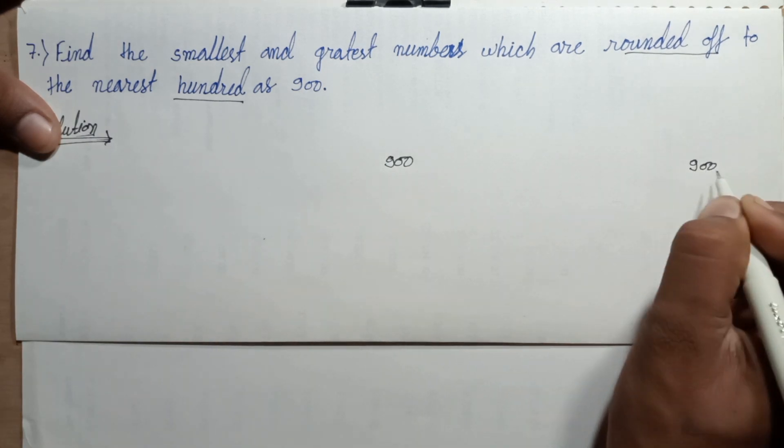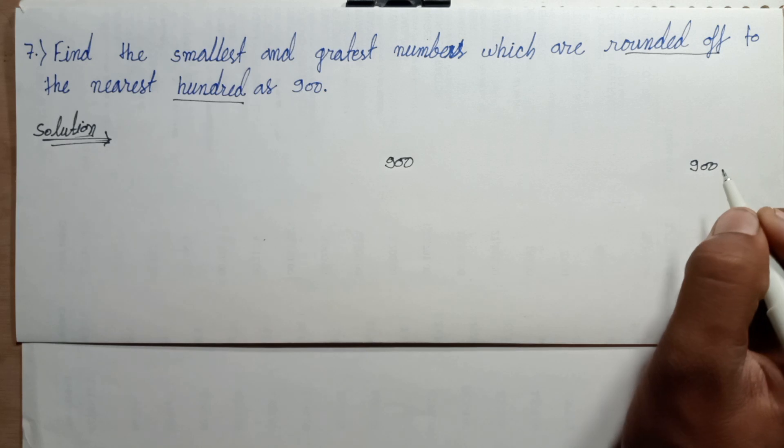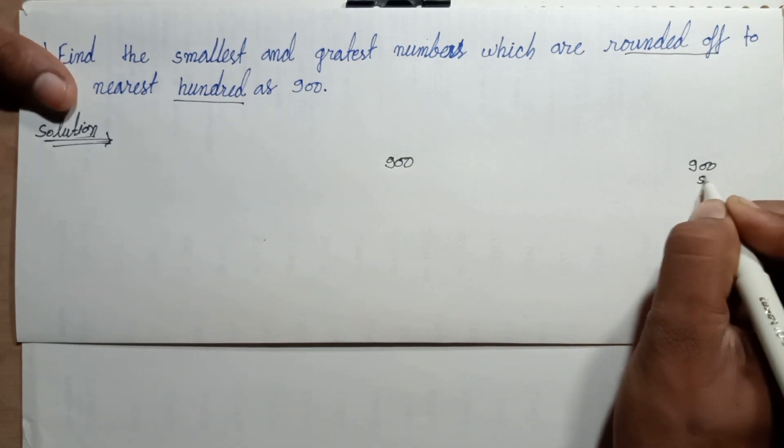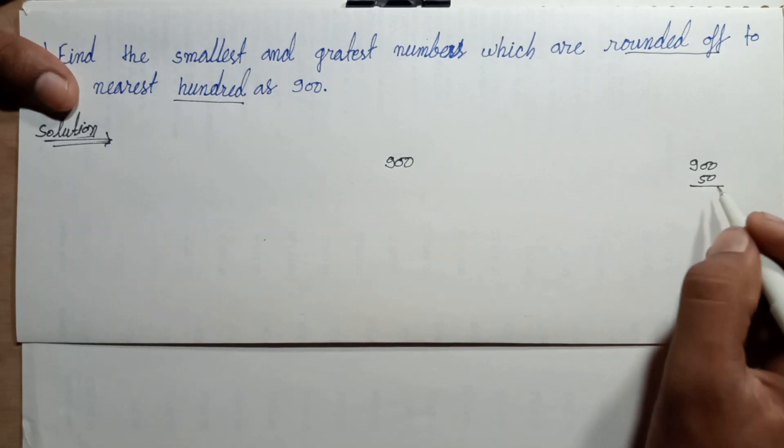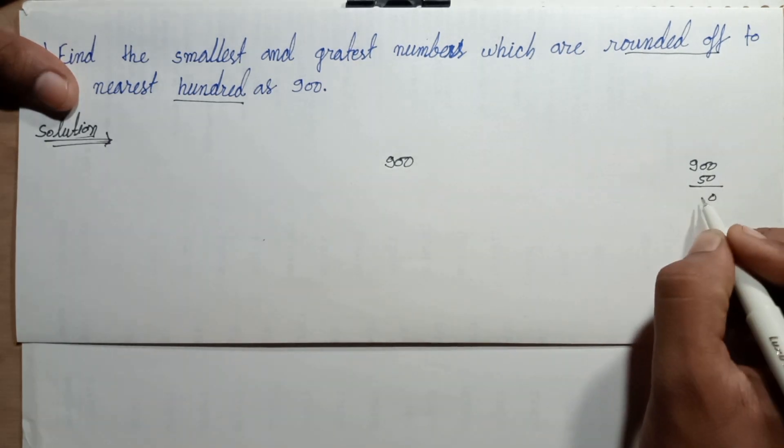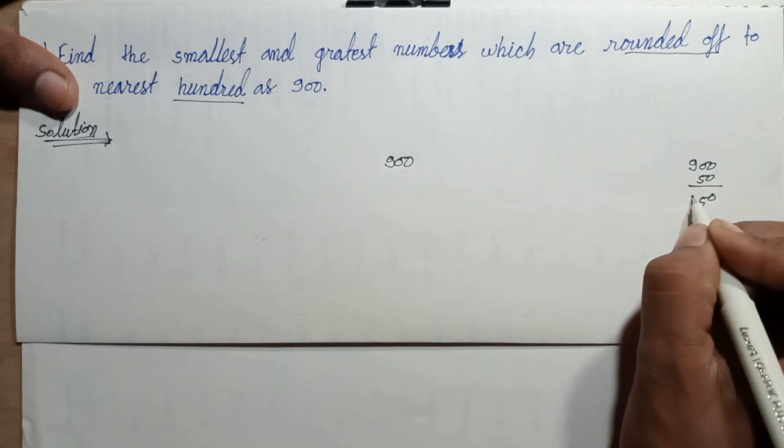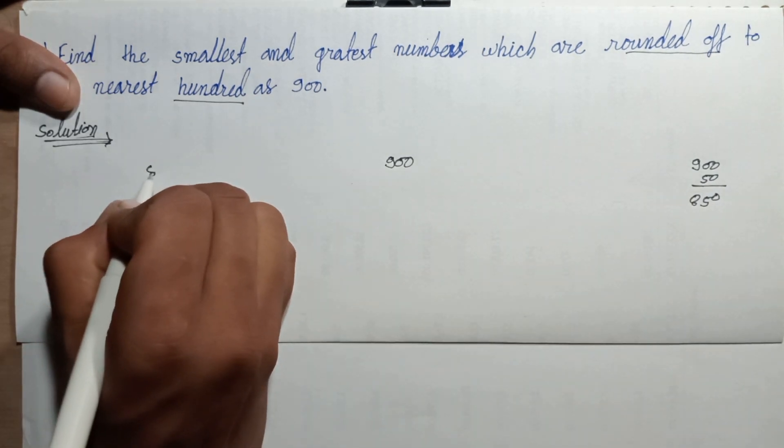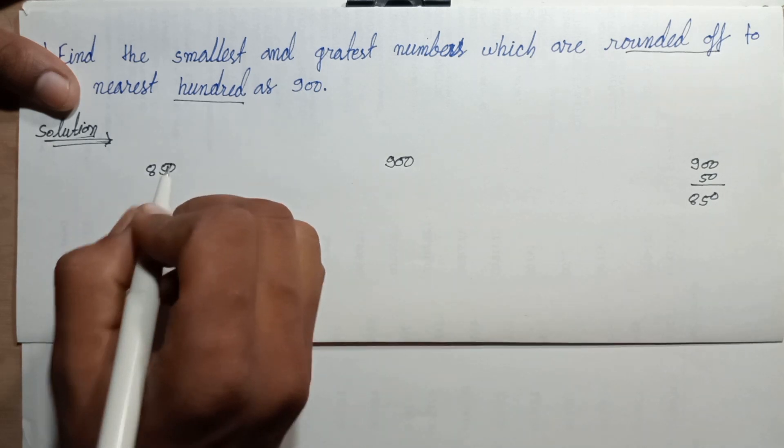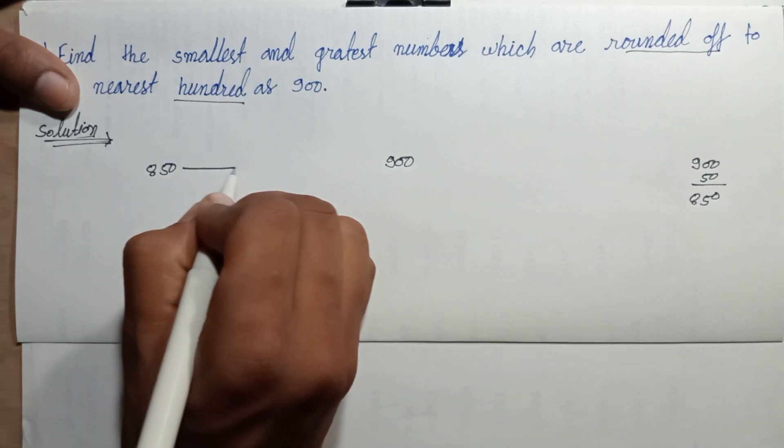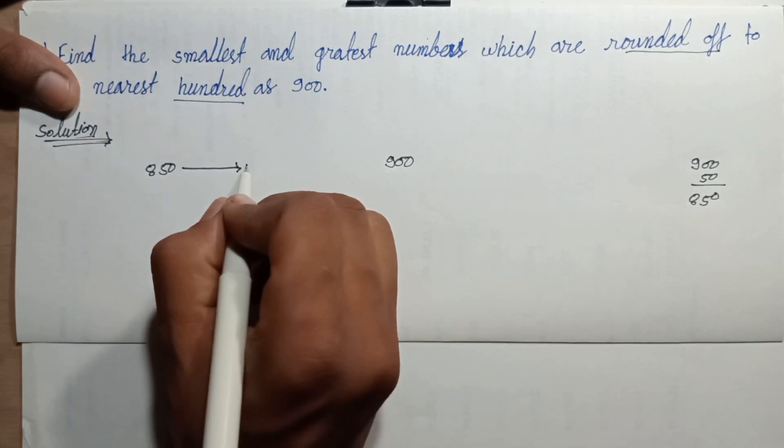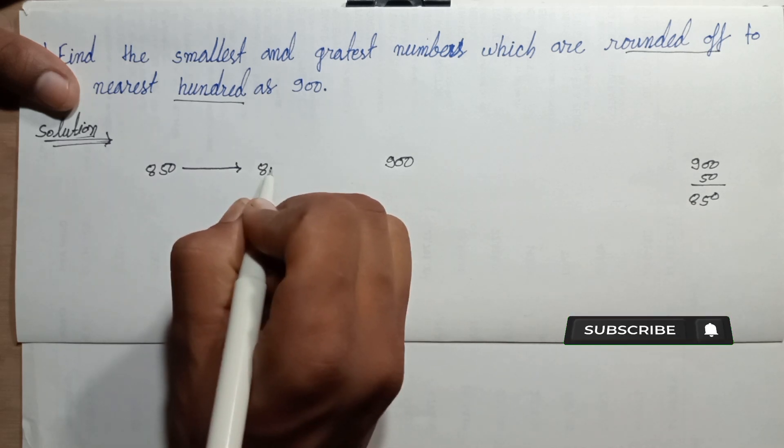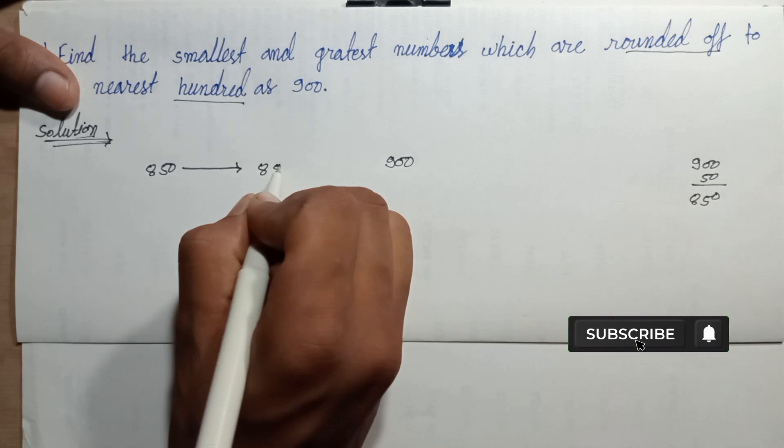Ninety subtract fifty. Zero, ten subtract five is five, eight. Eight hundred fifty.